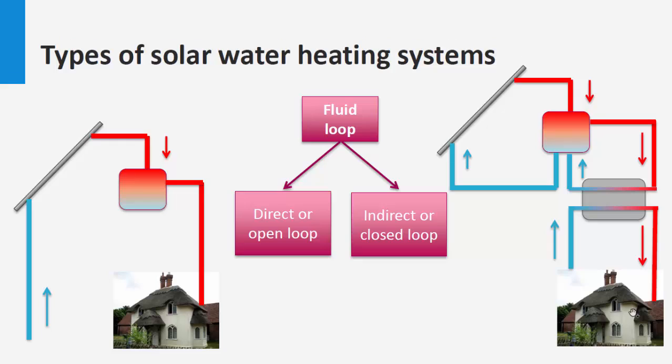First is loop system. When the fluid used in the application is the same that is heated in the collector, it is called a direct loop or open loop system. When the fluid heated in the collector goes to a heat exchanger to heat up the utility fluid, it is known as indirect loop or closed loop.